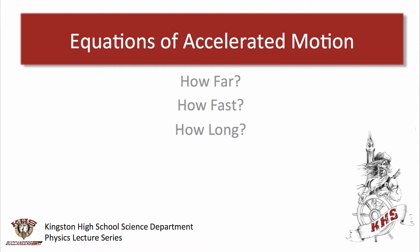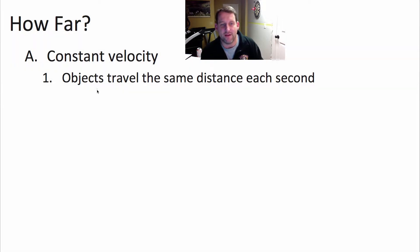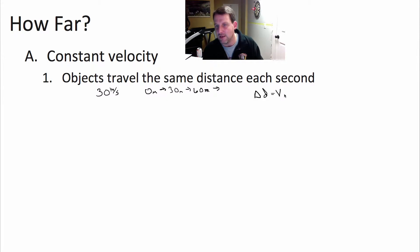We'll start here with how far things move. Constant velocity — figuring out how far something moves is pretty straightforward because constant velocity means you go the same distance every second. For example, if I'm traveling at a rate of 30 meters per second, that means every second I'm going 30 meters. I start out at 0 meters, then 30 meters, then 60 meters, and on and on. The equation for figuring out how far I've traveled is simply: change in distance equals velocity times change in time.